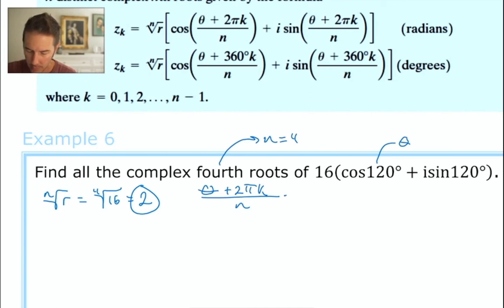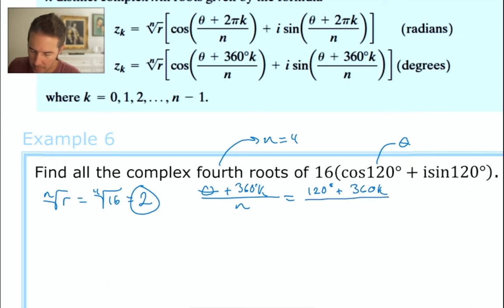So let me plug those in. The theta is 120 degrees plus, now I wrote 2πk, and I should have written 360 degrees times k, because we're working in degrees. So 360k, and then we have to divide that by our n value, which consistently throughout this problem is going to be 4.